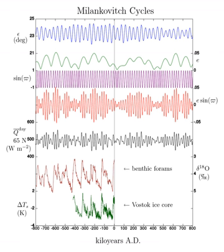The variations are complex, but a few cycles are dominant. The Earth's orbit varies between nearly circular and mildly elliptical — its eccentricity varies.